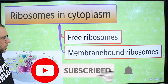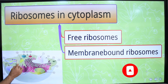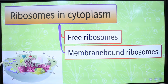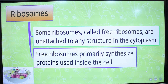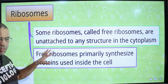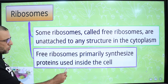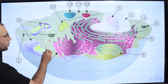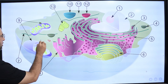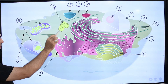Ribosomes exist in two states: free ribosomes and membrane-bound ribosomes. Free ribosomes are directly present in the cytosol. Membrane-bound ribosomes are attached to the endoplasmic reticulum as well as the nuclear membrane. Free ribosomes are primarily involved in the synthesis of proteins that are used inside the cell.